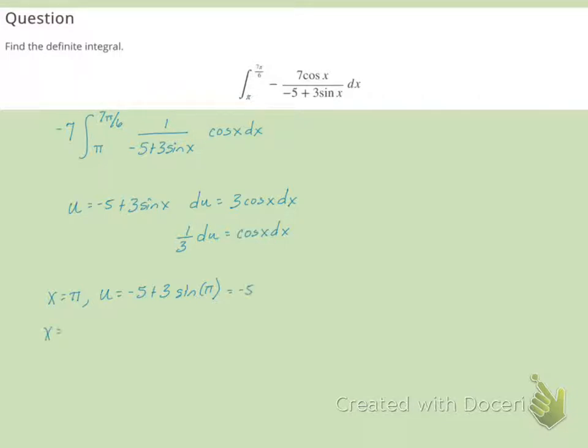When x equals 7pi over 6, then u is going to equal negative 5 plus 3 sine of 7pi over 6.